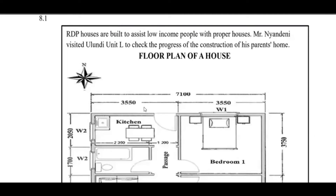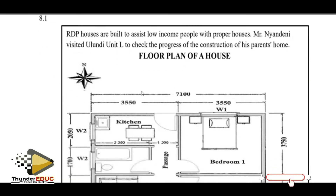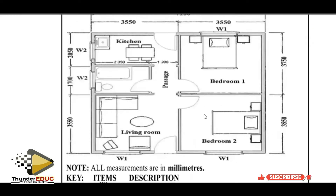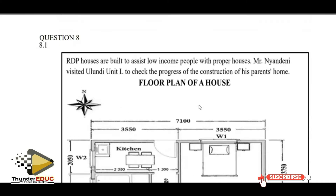Let's look at question number eight. It's a floor plan. A floor plan is a layout of how a house will look in the future. It shows where the kitchen will be, the bedroom, toilet, living room, and the garage if there is one.